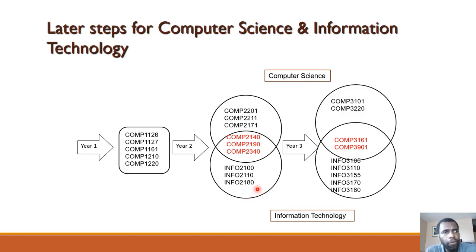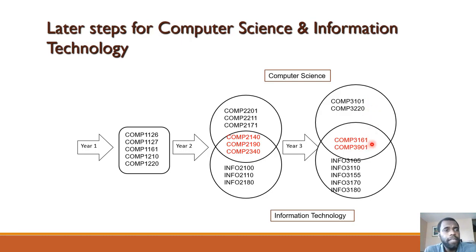At the third year, the core courses for Computer Science are the Operating Systems course COM3101, COM3220 (Artificial Intelligence), the Database course COM3161, and the Group Project course COM3901. If your major is Information Technology, you take COM3161 and COM3901, in addition to the five IT courses: Info3105, Info3110, Info3155, Info3170, and Info3180.